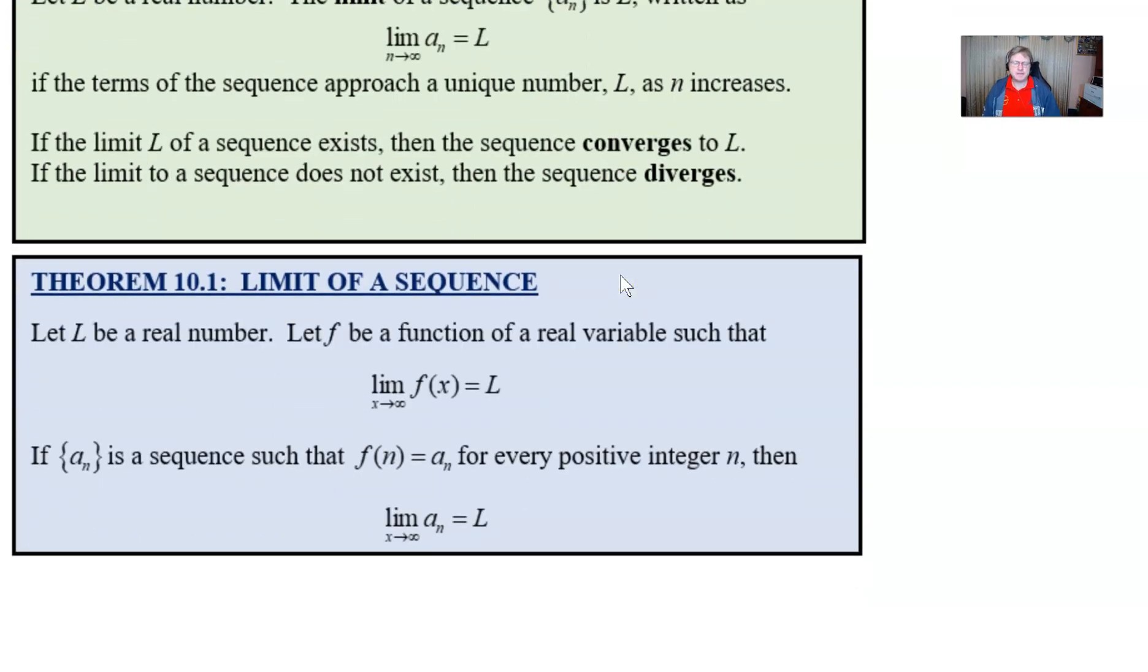Now our formal theorem for the limit of a sequence looks like this. Let L be a real number and let f be a function of a real variable such that the limit of a function as x approaches infinity is equal to L. Well, what does that have to do with sequences? Well, if the sequence a_n is such that f(n) is equal to a_n for every positive integer n, then we can just use a slightly different version of this limit. And this different version of that limit is the limit of a_n as n approaches infinity.